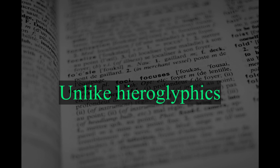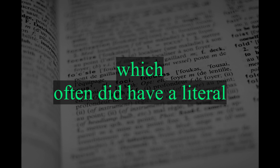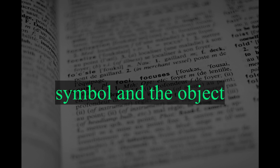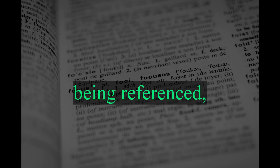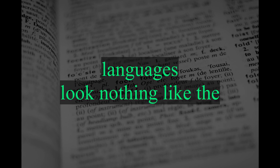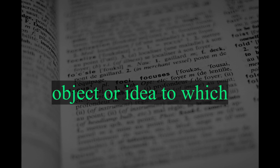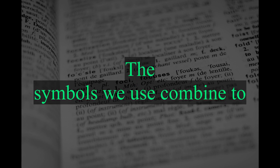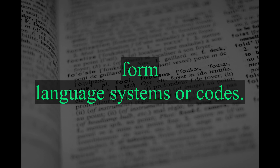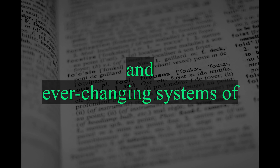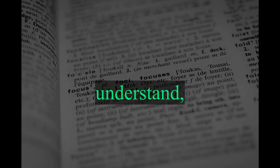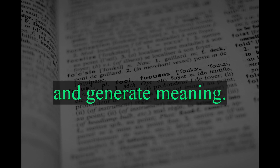Unlike hieroglyphics in ancient Egypt, which often did have a literal relationship between the written symbol and the object being referenced, the symbols used in modern languages look nothing like the object or idea to which they refer. The symbols we use combine to form language systems or codes. Codes are culturally agreed on and ever-changing systems of symbols that help us organize, understand, and generate meaning.